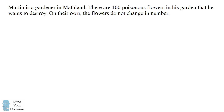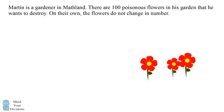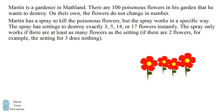Hey, this is Presh Talwalkar. Martin is a gardener in math land. There are a hundred poisonous flowers in his garden that he wants to destroy. On their own, the flowers do not change in number. Martin has a spray to kill the poisonous flowers, but the spray works only in a specific way. The spray has settings to destroy exactly 3, 5, 14, or 17 flowers instantly.